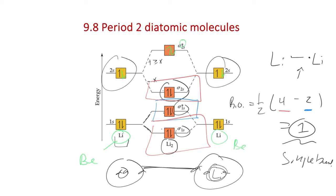The bond order for Be2 = one-half times (4 minus 4) = 0. So no net bond is expected between two beryllium atoms. Beryllium can form a solid — it is a solid at room temperature — but just two distinct beryllium atoms won't bond. We would expect a bond between two lithium atoms, but not two beryllium atoms. So far, we've only had s orbitals interacting. When we get to N2 and O2, those atoms have p orbitals as well, so we'll have access to the 2s and 2p set of orbitals.